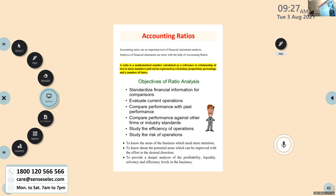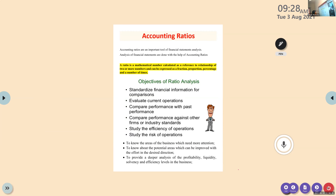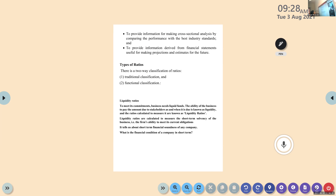So what is a ratio? It is a mathematical number calculated as a reference to the relationship between two or more numbers. It shows the relationship between two or more items, and we can express it either in the form of a fraction, proportion, percentage, or also as number of times. We also saw what the objectives of ratio analysis are. Then we discussed two types of ratios: traditional classification as well as functional classification.